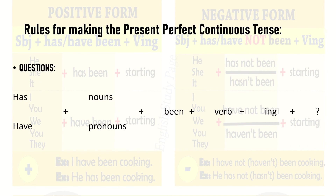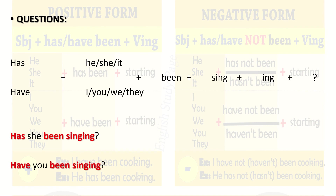In a question, we start with 'has' or 'have', then add the noun or pronoun — he, she, it, etc. — then 'been', plus the verb, plus '-ing', and at the end we put a question mark. For example: 'Has he/she/it been singing?' 'Have I/you/we/they been singing?' 'Has Tashi been singing?'